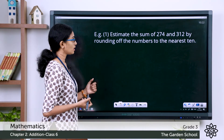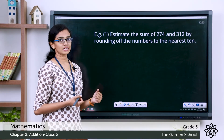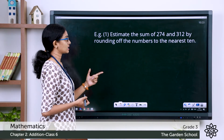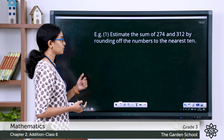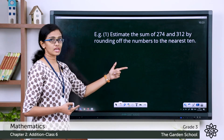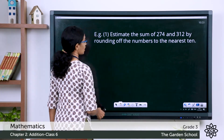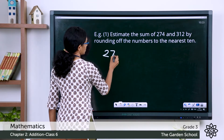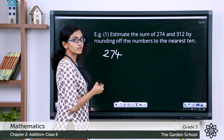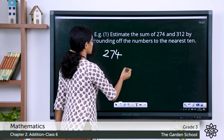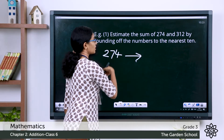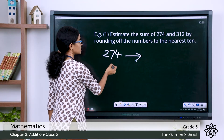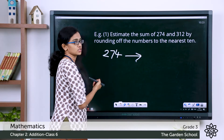Look at this question: estimate the sum of 274 and 312 by rounding off the numbers to the nearest ten. So let's round off each of these addends. 274 rounded off to the nearest ten — here the rounded digit is the tens digit.